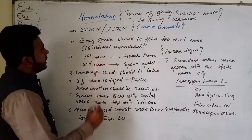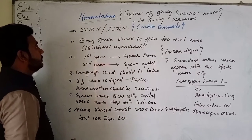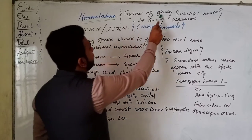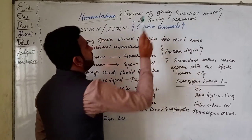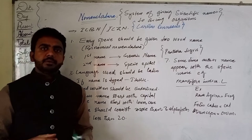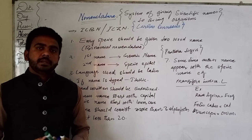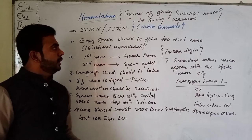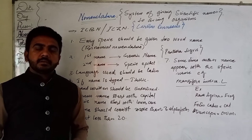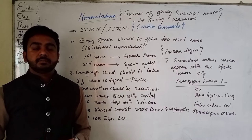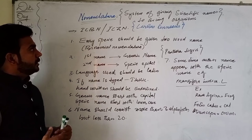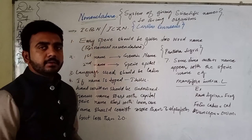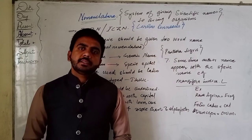First we should understand what is meant by the term nomenclature. Nomenclature is defined as the system of giving scientific names to living organisms, to avoid the confusion which may arise during discussions between speakers of different languages.